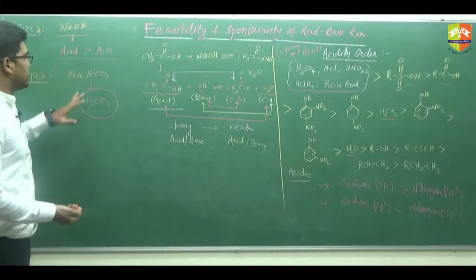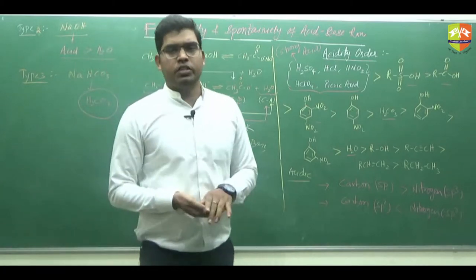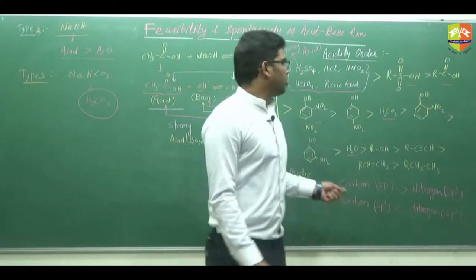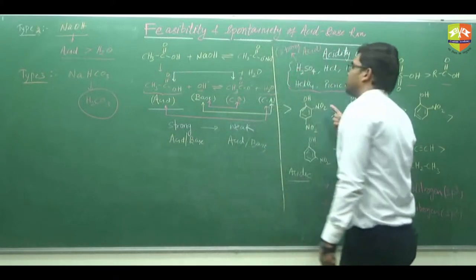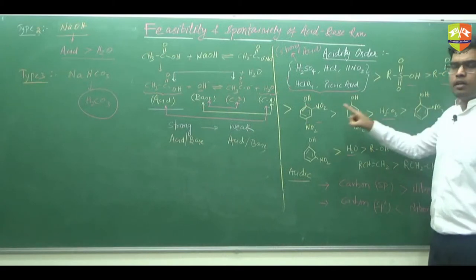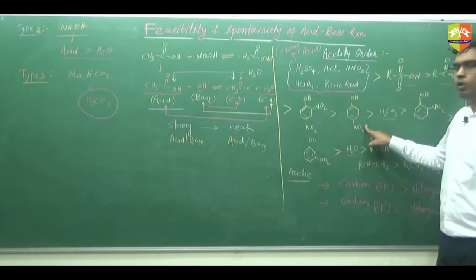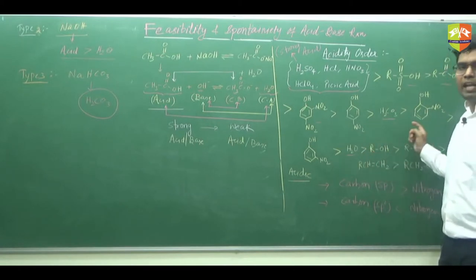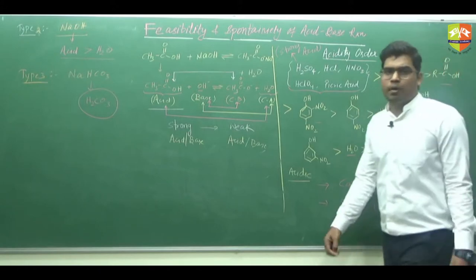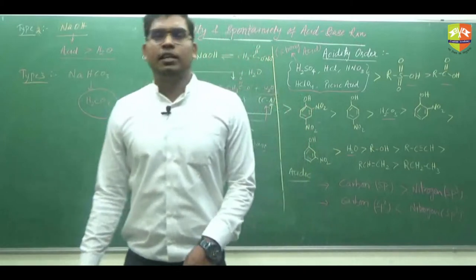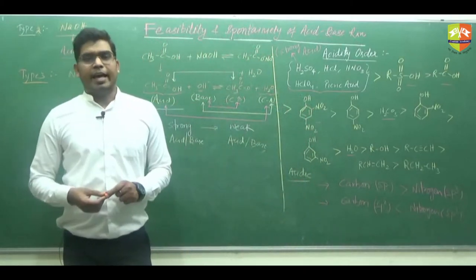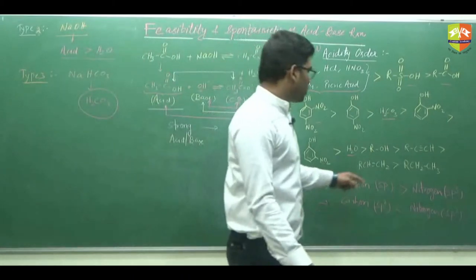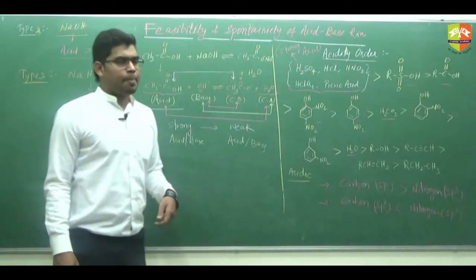So this is what the three different bases are, and based on this they have asked questions in the JEE exam. What you need to know is the order of acidity: all the strong acids first, then sulfonic, carboxylic, 2,4-dinitrophenol, 4-nitrophenol, H2CO3, orthonitro, metanitro, H2O, then alcohol, alkyne, alkene, alkane. You also have to memorize that SP-hybridized carbon is more acidic than SP3-hybridized nitrogen, and SP2-hybridized carbon is less acidic than SP3-hybridized nitrogen.